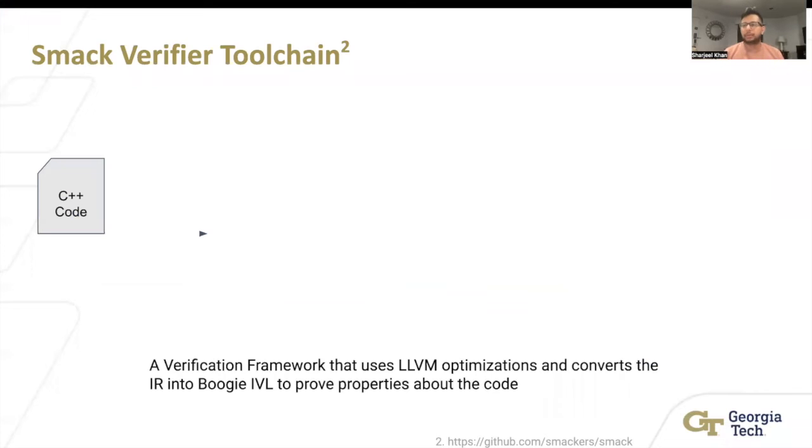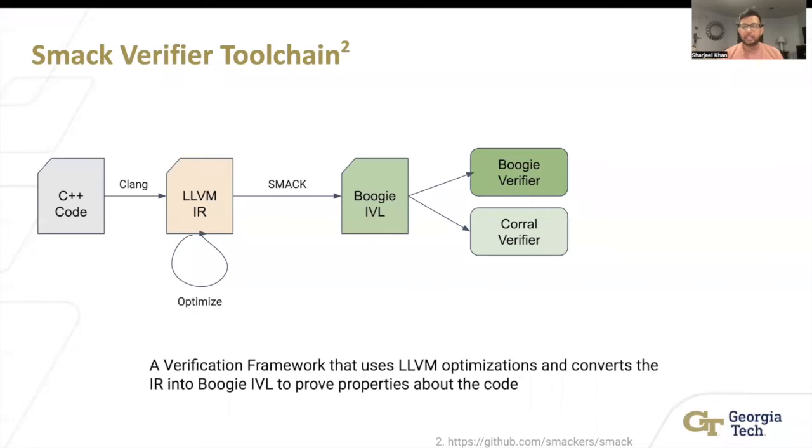Before we explain this procedure in more detail, let's talk a little bit about SMACK. SMACK is a verification framework that uses LLVM optimizations and converts the IR into Boogie IVL to prove properties of the code. For example here, you see the C++ code, it converts into LLVM IR. You make sure it's optimized a lot, and then you run SMACK to make this Boogie IVL. It's called IVL because it's an intermediate verification language. This language is created by Microsoft and they have verifiers which can take this language and prove properties.